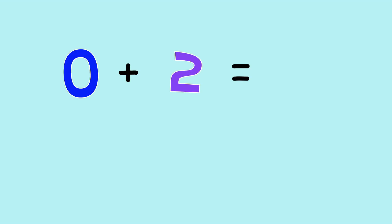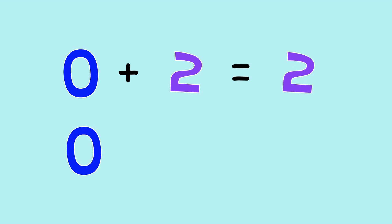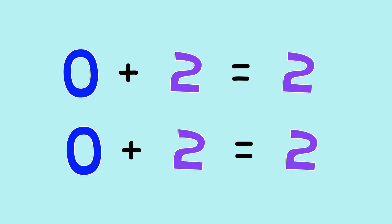What does zero plus two equal? That's correct, two. Zero plus two equals two.